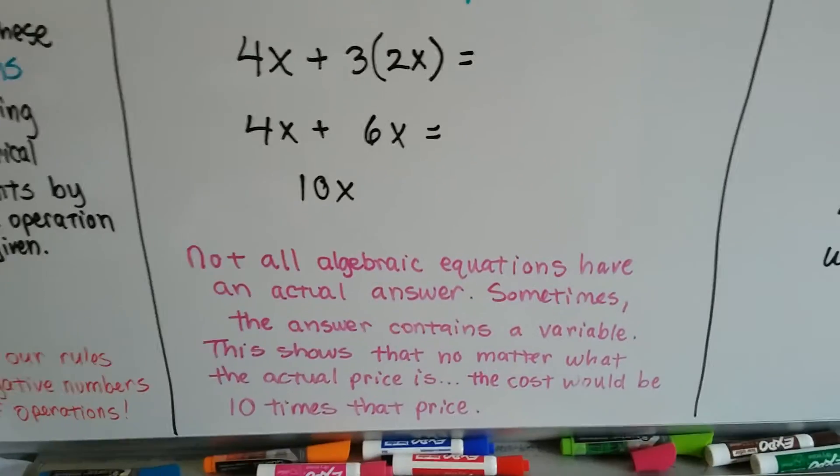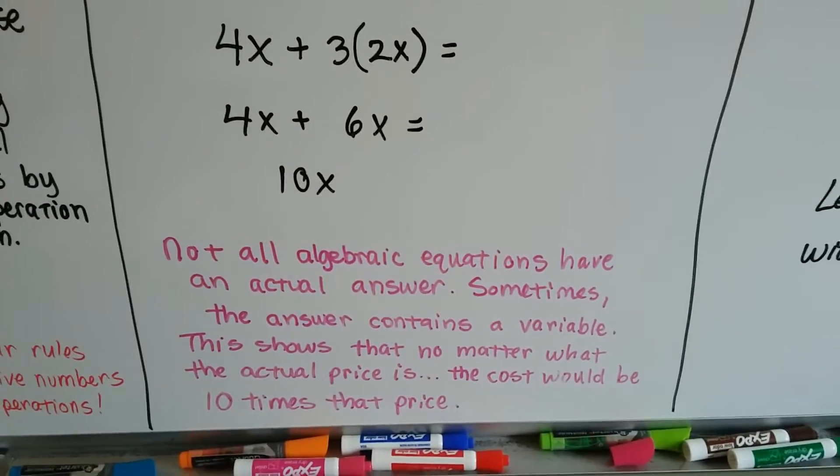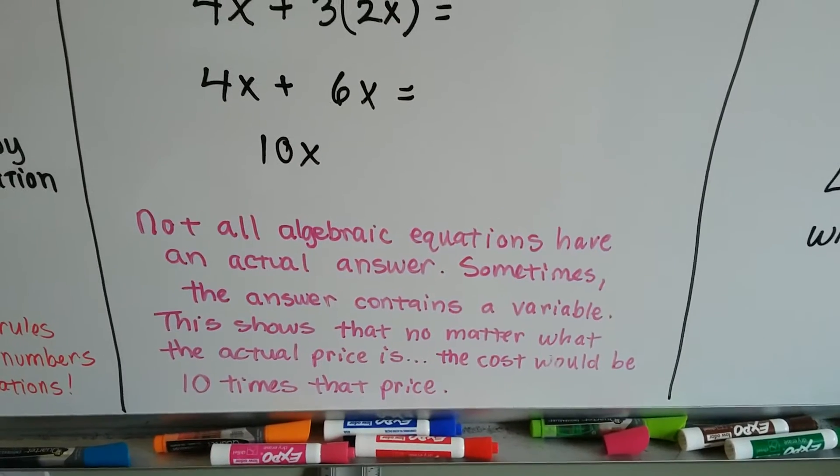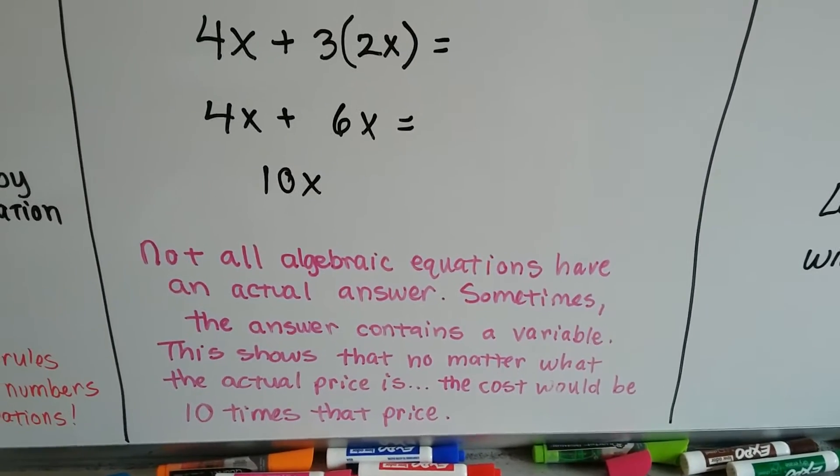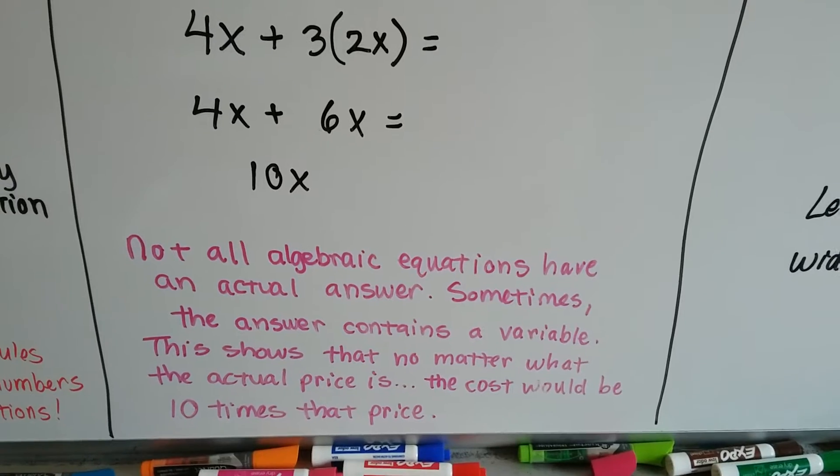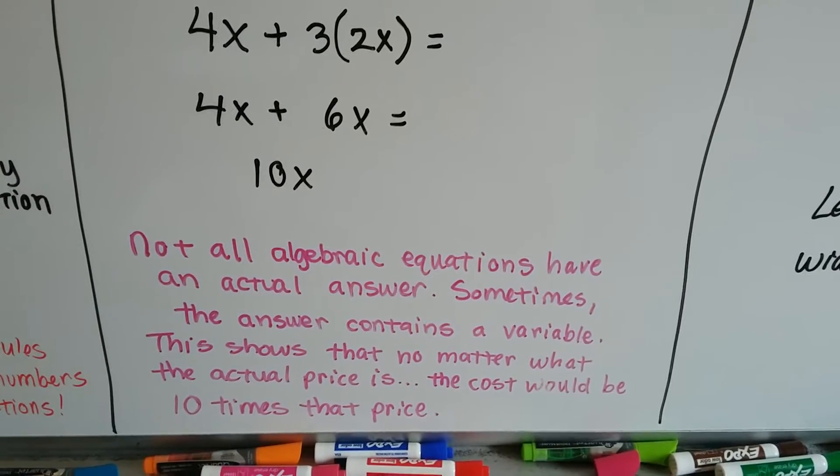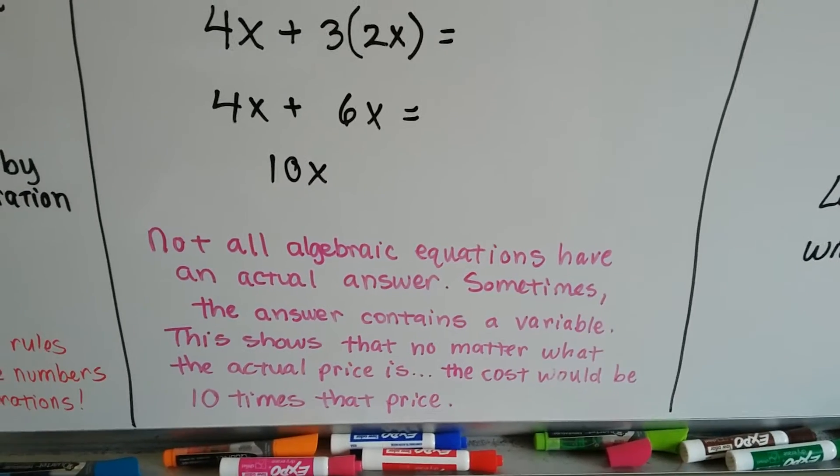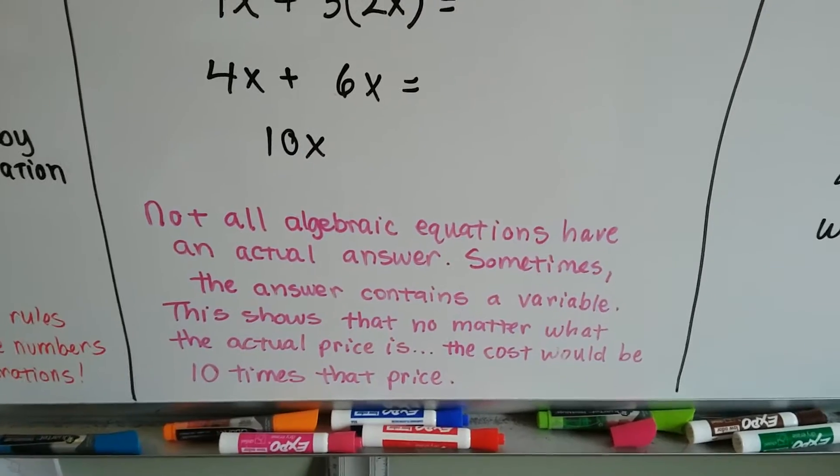So not all algebraic equations have an actual answer. Sometimes the answer contains a variable, like this one. This shows that no matter what the actual price is of the shirt and pants, the cost would be 10 times that price. So it could be various answers, but that's okay.